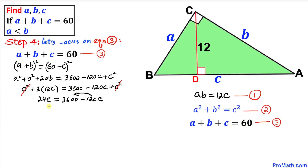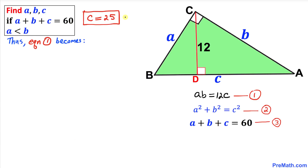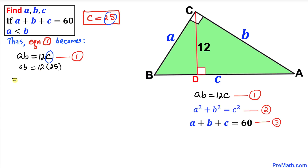We're left with 24C equals 3600 minus 120C. Moving the 120C to the other side gives 24C plus 120C equals 3600, so 144C equals 3600. Therefore C equals 25. Now substituting C equals 25 into equation 1, A times B equals 12 times 25, so AB equals 300.